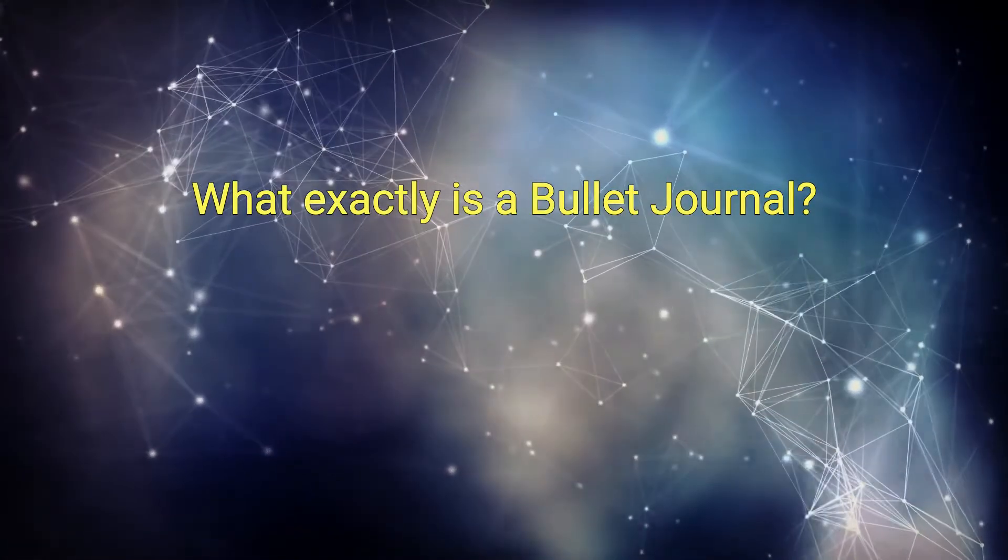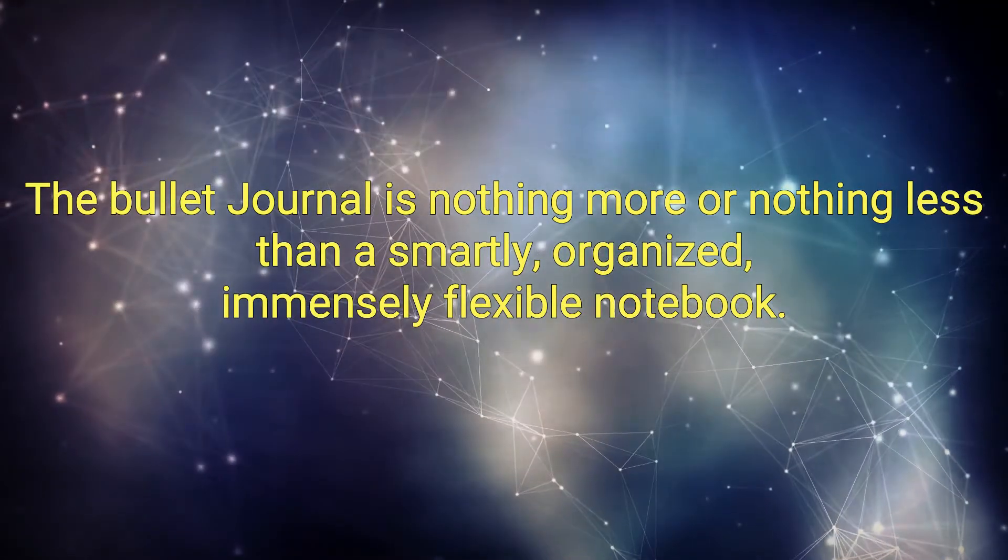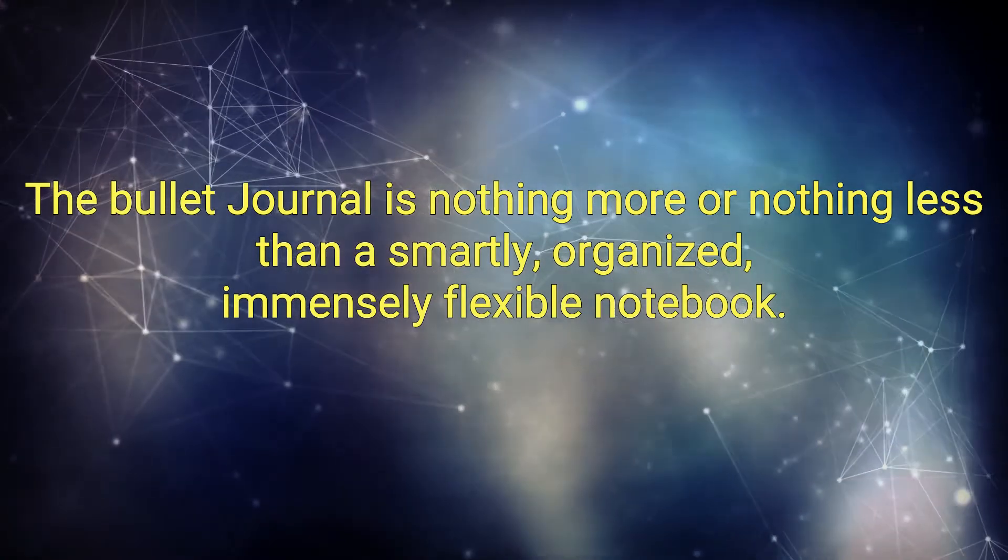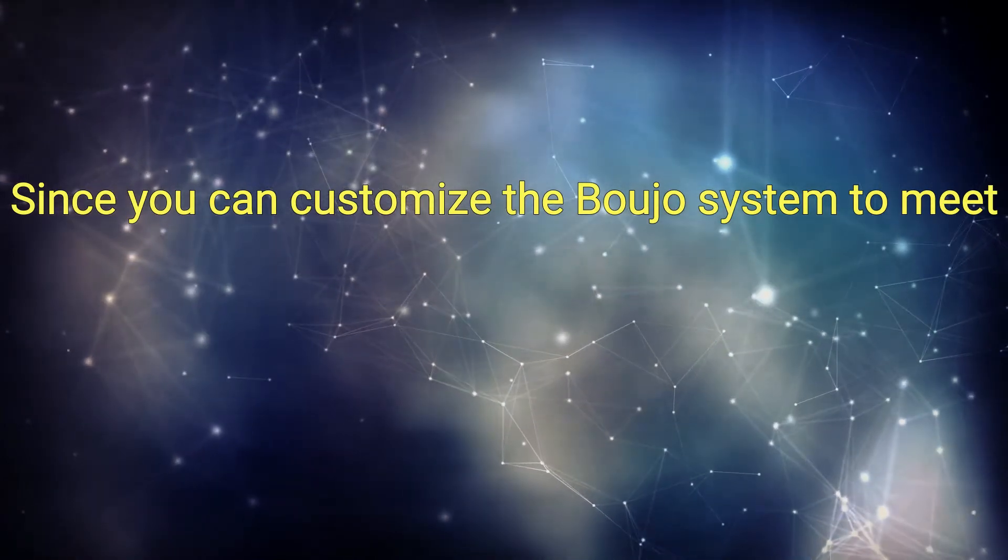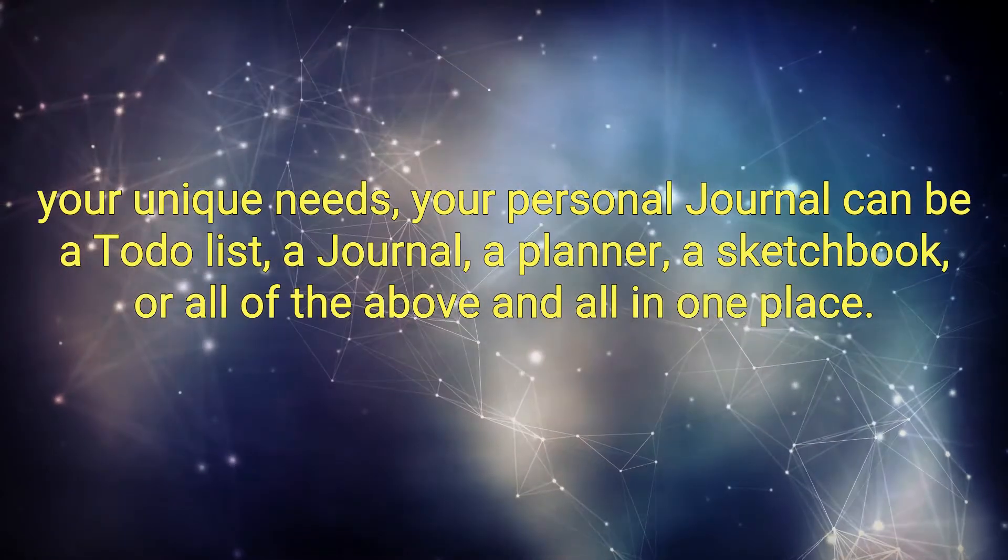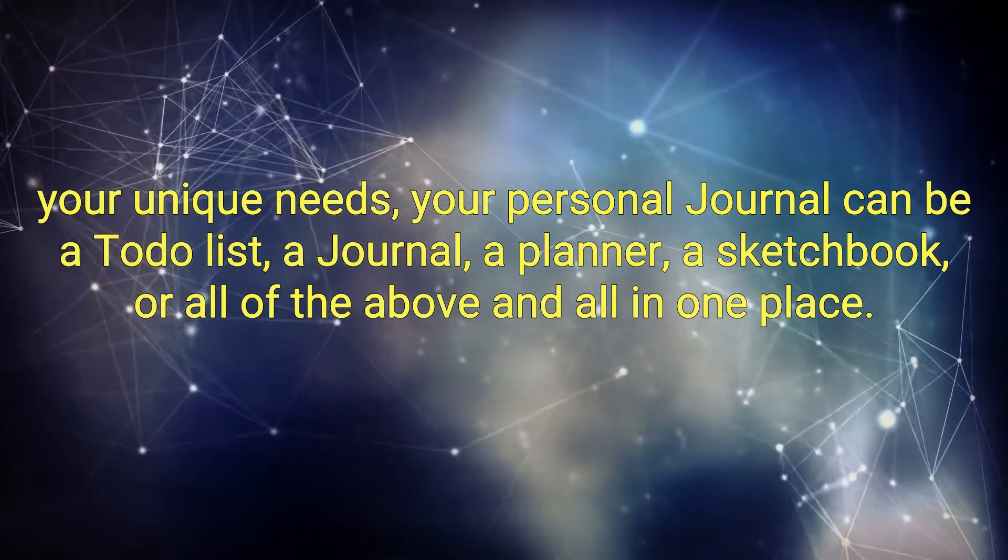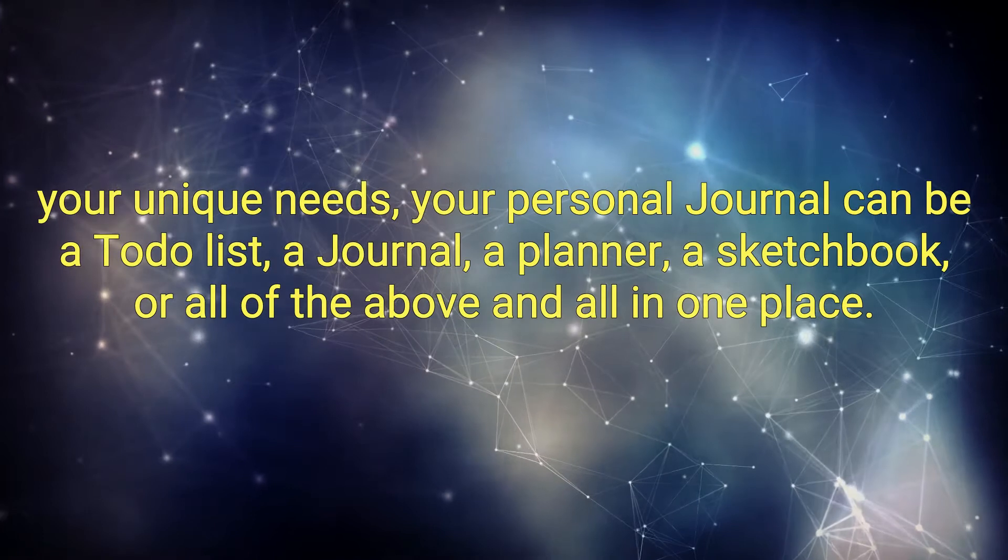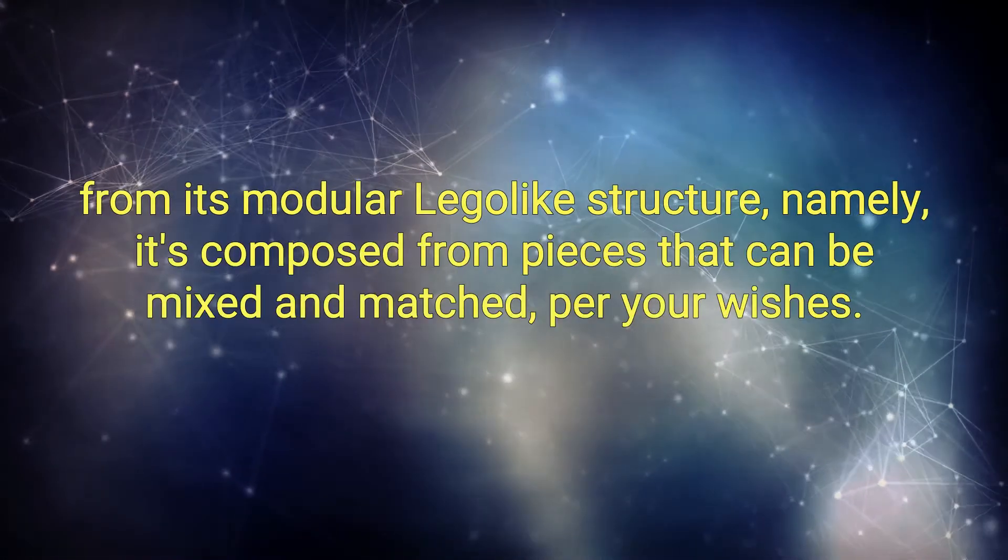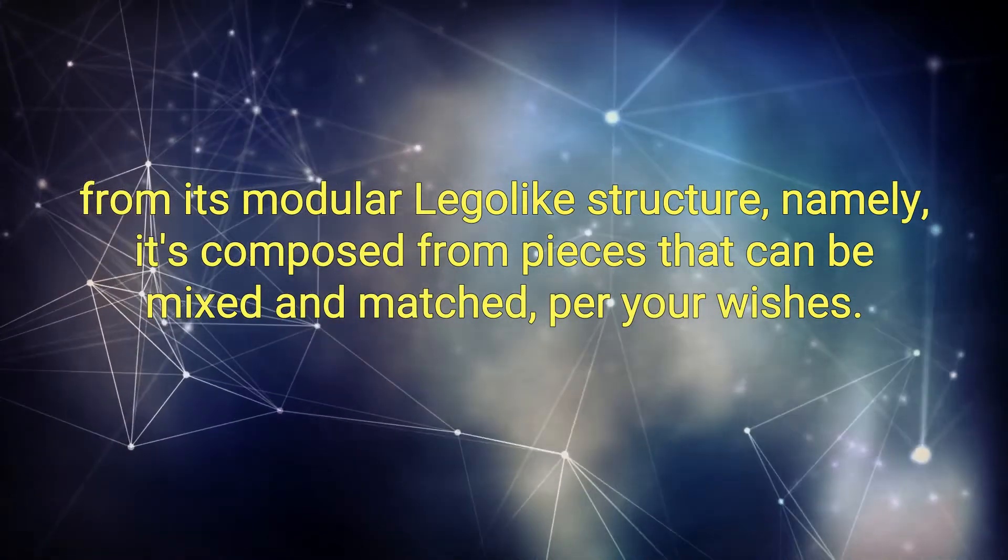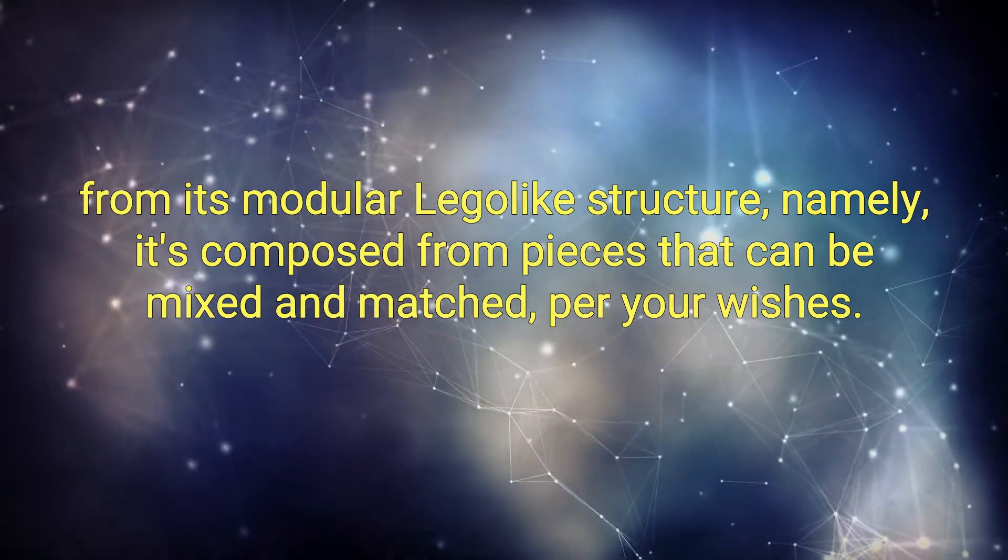What exactly is a Bullet Journal? The Bullet Journal is nothing more or nothing less than a smartly organized, immensely flexible notebook. Since you can customize the Bujo system to meet your unique needs, your personal journal can be a to-do list, a journal, a planner, a sketchbook, or all of the above, and all in one place. The elasticity of the Bullet Journal stems from its modular Lego-like structure. Namely, it's composed from pieces that can be mixed and matched per your wishes.